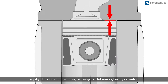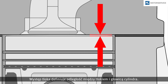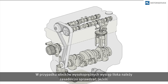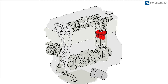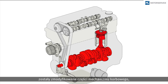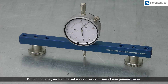The piston protrusion defines the distance between the piston and cylinder head in diesel engines. The piston protrusion must always be checked if new pistons have been installed, if parts on the crank mechanism have been modified, or if the face of the engine block has been reworked. A dial gauge with a measuring bridge is used for measurement.